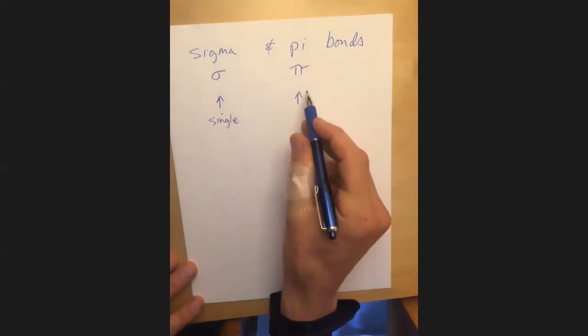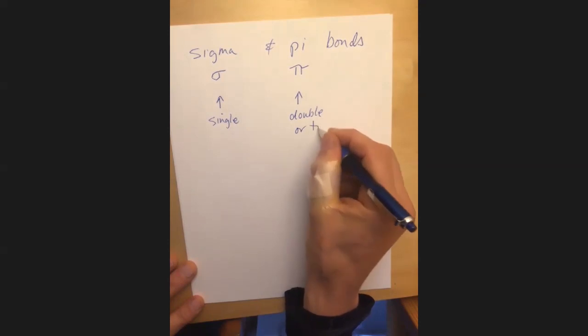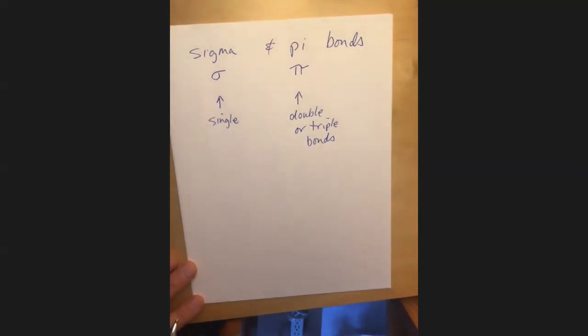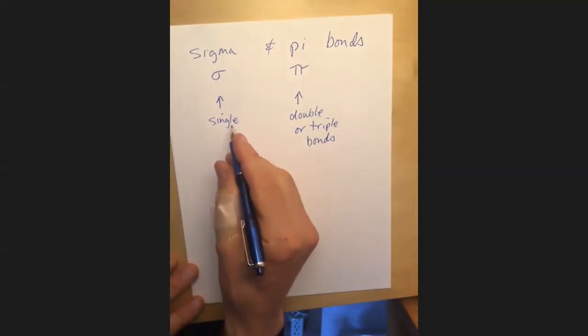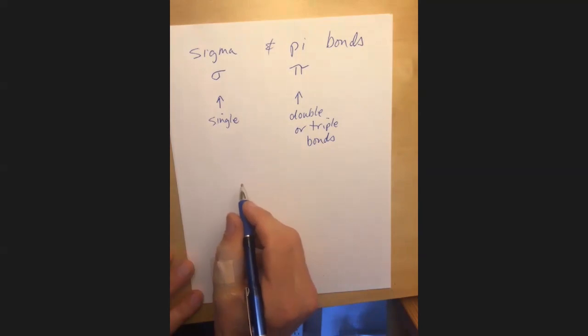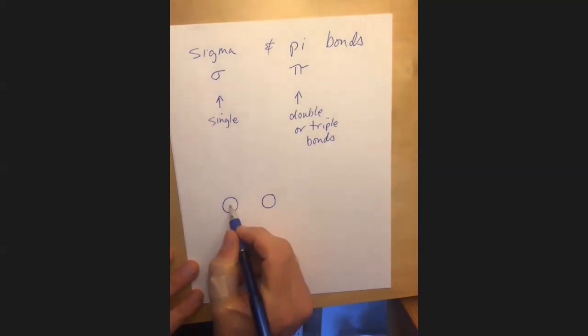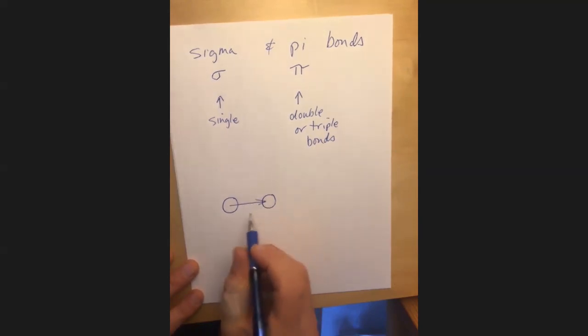And pi bonds, almost always you'll only ever see them if you see double or triple bonds. So far so good? Yep. So let's look at sigma bonds for a second. So a sigma bond is the bond that you get when you look at two atoms. So here's atom one and atom two. And if you look directly down that bond from one atom to another, a sigma bond, you'll be able to see it will be in this region in here between these two atoms.